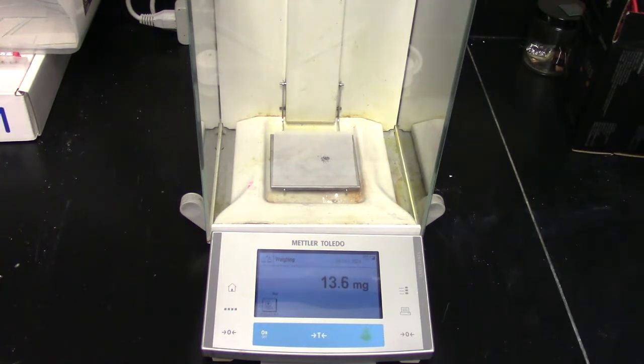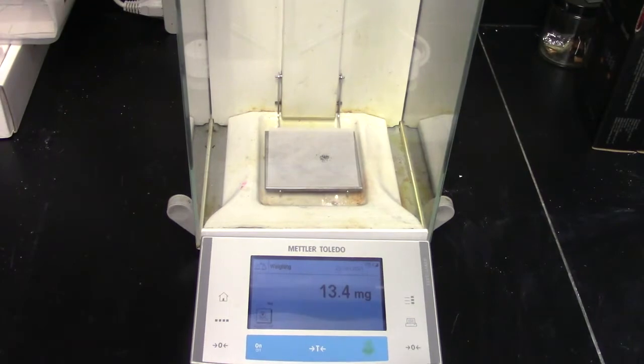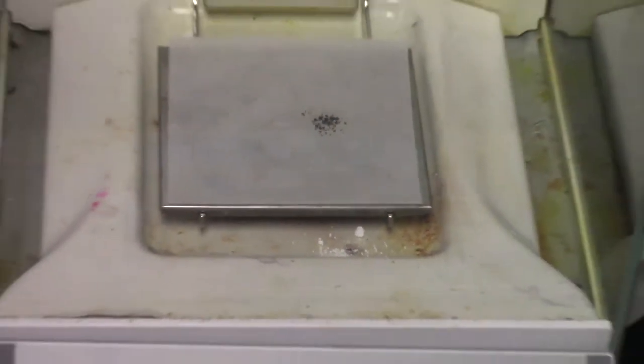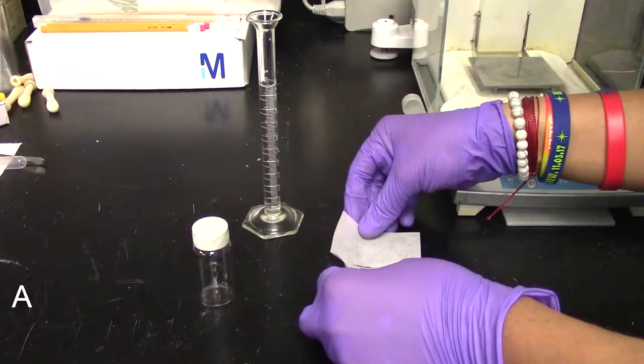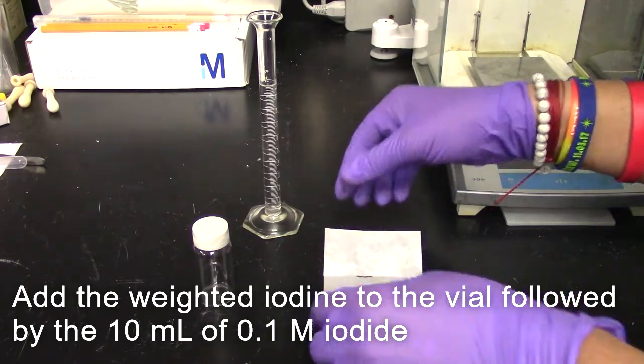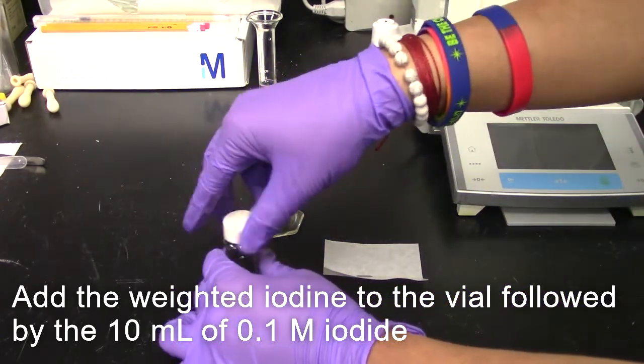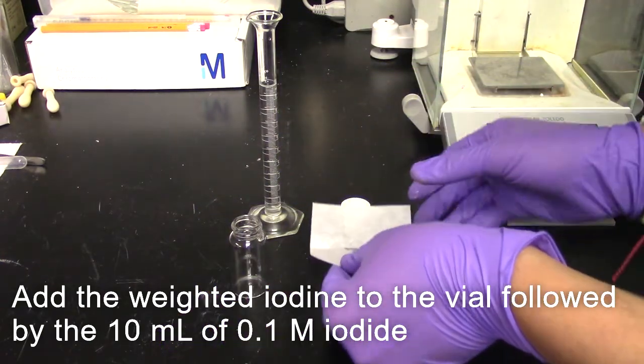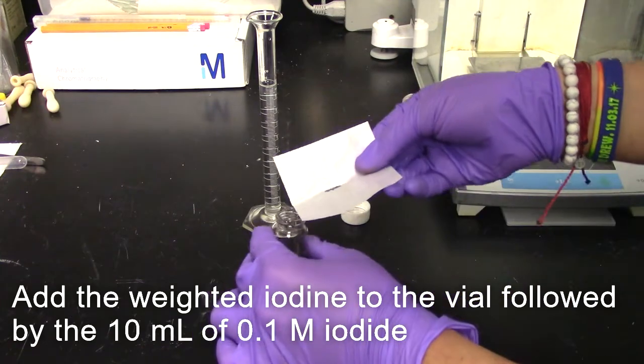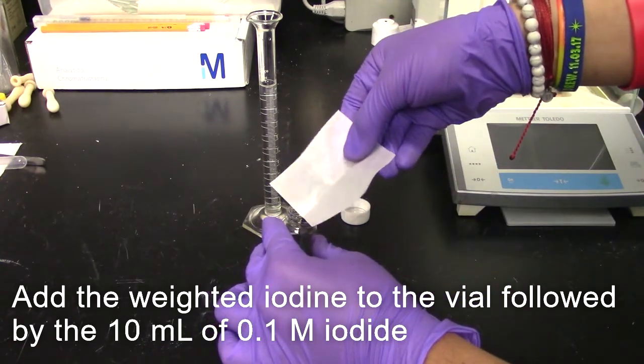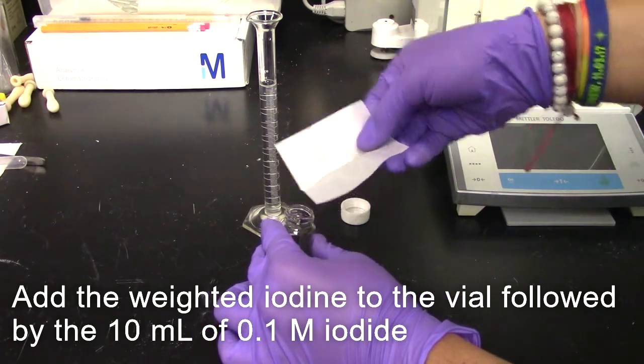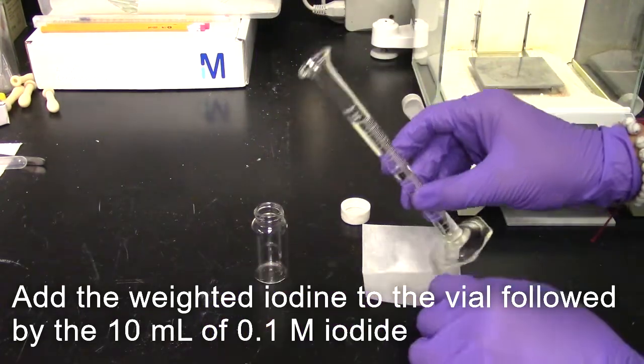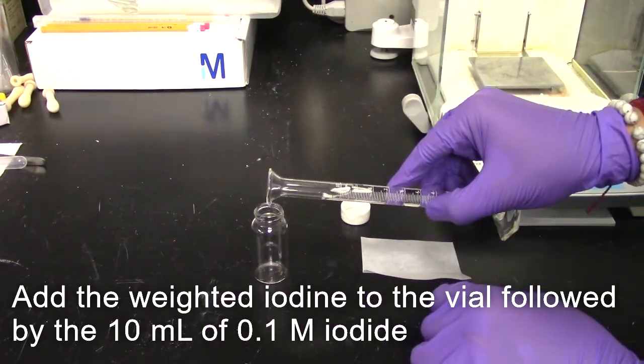Once again, having a few extra milligrams of iodine crystal will not affect the electrolyte solution. Now add the iodine crystal to a vial followed by 10 milliliters of the 0.1 molar iodide solution. Be careful when adding the pure iodine for it is a very small amount.